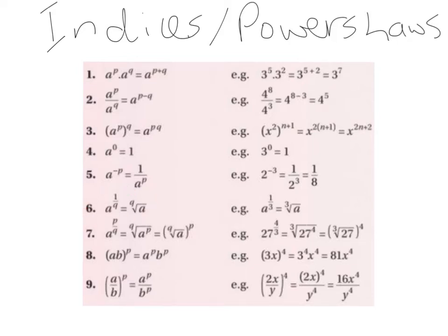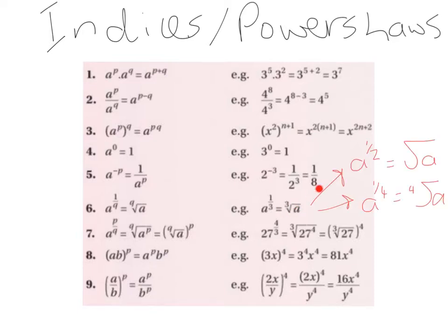Law 6: A to the power of 1 over Q gives us the Q-th root of A. So A to the power of a third gives us the third root of A — this is not 3 multiplied by root A, it's the third root of A, meaning what times what times what gives us A. A to the power of a half gives us the square root of A, which we usually see written as root A. A to the power of a quarter gives the fourth root, a fifth gives the fifth root, a sixth gives the sixth root, and so on.